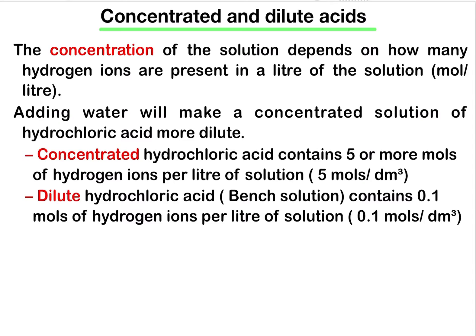Concentrated hydrochloric acid contains five or more moles of hydrogen ions per liter of solution, whereas dilute hydrochloric acid contains 0.1 moles of hydrogen ions per liter of solution.